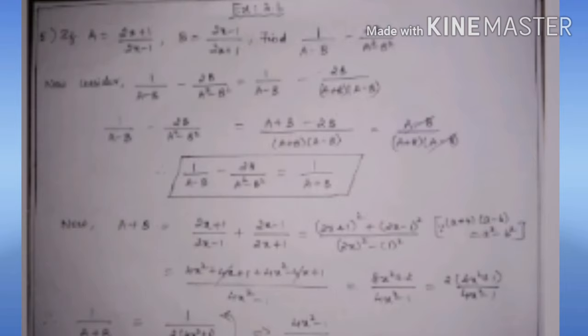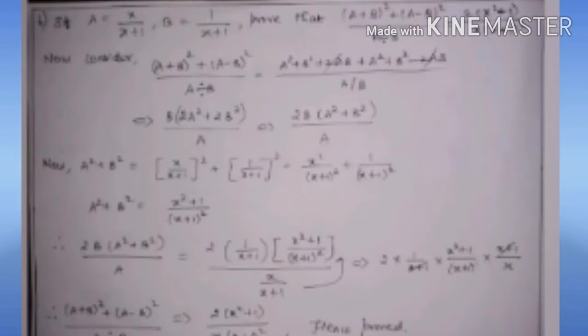Now I find A + B by adding both expressions. After taking LCM, 2X + 1 becomes (2X + 1)² and 2X − 1 becomes (2X − 1)². After simplification, A + B = 2(4X² + 1)/(4X² − 1). Substituting into 1/(A + B), we get the answer as (4X² − 1) / [2(4X² + 1)].